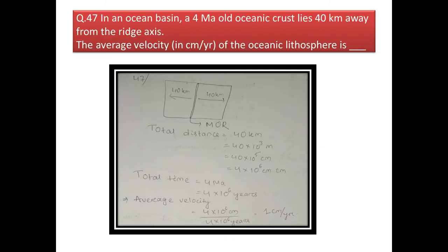Next question: in an ocean ridge, a 4 million year old oceanic crust lies 40 km away from the ridge axis. Find the average velocity of the oceanic lithosphere in cm/year. Convert 40 km to cm: 40 × 10³ m × 100 cm/m = 4 × 10⁶ cm. Time = 4 × 10⁶ years. Average velocity = (4 × 10⁶ cm) / (4 × 10⁶ years) = 1 cm per year.